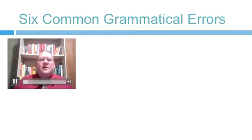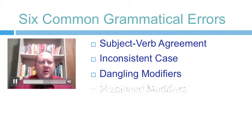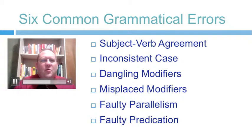Here's a quick list of the six things we'll be talking about in this podcast — the six grammatical errors: subject-verb agreement, inconsistent case, dangling modifiers, misplaced modifiers, faulty parallelism, and faulty predication. We're going to go over each individually and discuss what each of these means.